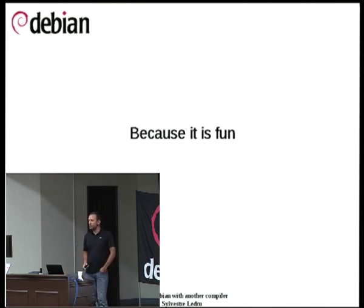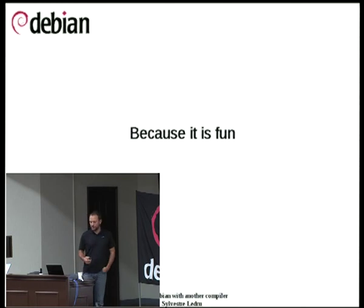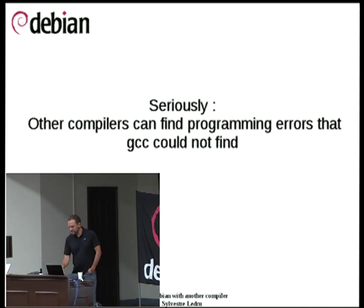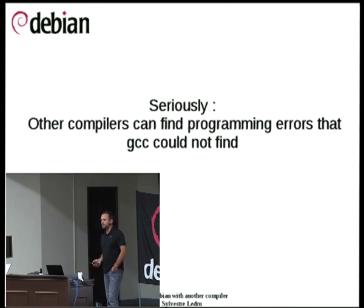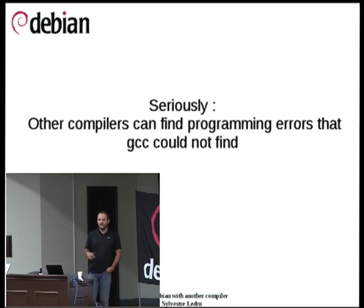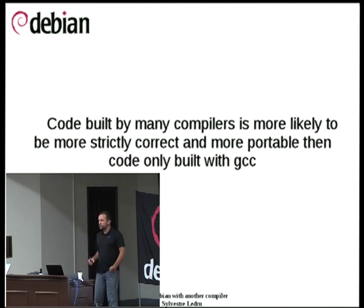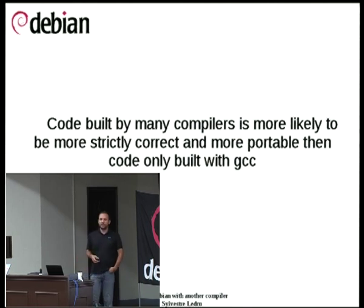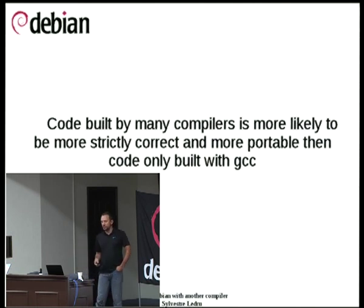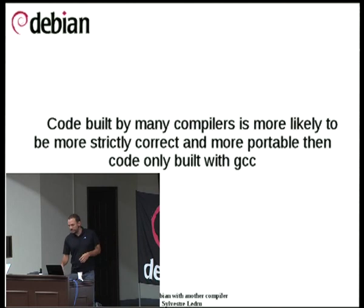It is a very nice work because Clang is behaving the same way GCC is on most of the arguments, so it is not a very hard job, but it is very fun and enjoyable. More seriously, if I'm doing this work, it is because the more you use compilers, the more errors you can find. I will show many examples where Clang detects things that GCC cannot, which really improves the code in the archive. The more you use different compilers, the more the code is correct and portable. If you use some specific GCC extension, you're pretty sure it won't work with Visual Studio or Intel compilers and so on.